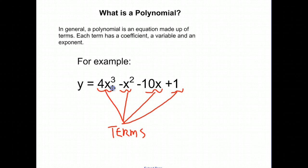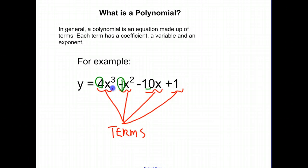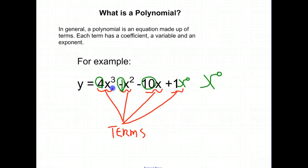The coefficient is the number next to the x value. It needs to be a real number. This 4 is a coefficient. The number 1 next to x squared — even though you don't see the 1 there — is also considered to be a coefficient. The 10 is a coefficient, as well as the 1. You don't see an x term next to the constant, but you could consider x to the 0 to be next to it. Any number raised to the 0 power, by definition, is considered to be 1. So these are all considered to be our coefficients.